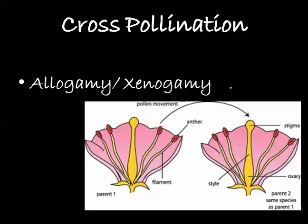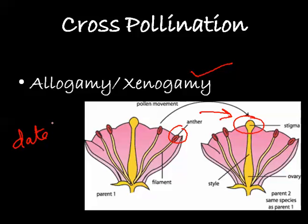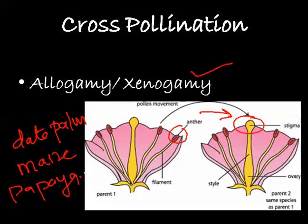The second type is cross-pollination, also called allogamy or xenogamy, where the pollen from one flower falls on the stigma of another flower of a different plant. Pollen from this anther falls on the stigma of a second parent plant. Typical examples are date palm, maize, and papaya. There are also different agents that transmit pollen to different flowers, which we will discuss in further sessions.